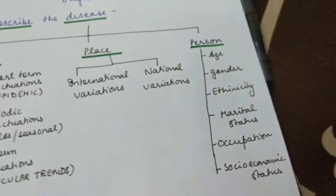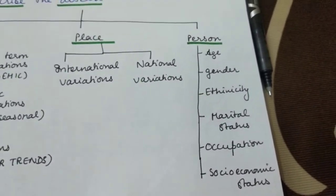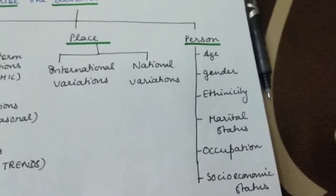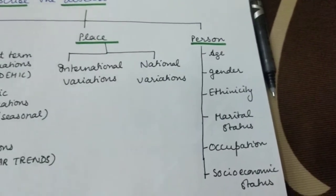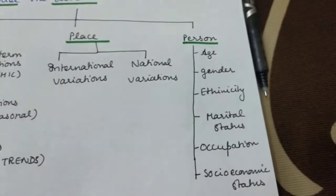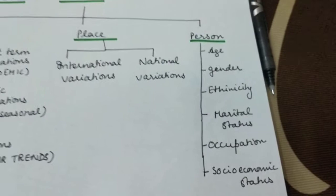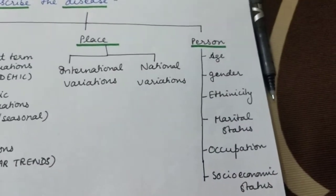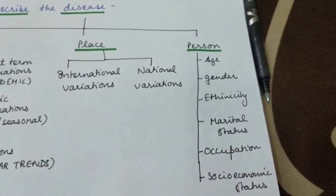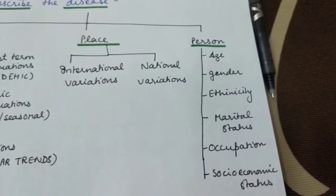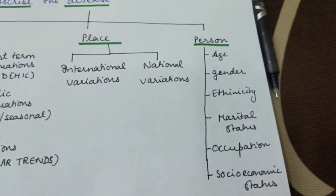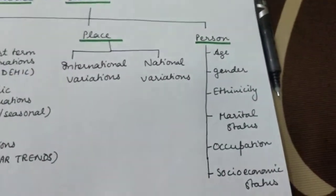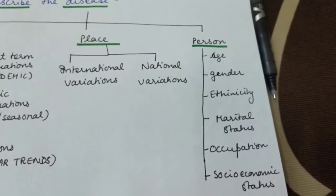Place distribution can show international variations: in Japan there are increased cases of stomach cancer, in the USA increased cases of breast cancer, and in India increased cases of carcinoma cervix in females and oral carcinoma in males. Nationally, Kangri carcinoma is seen in Kashmir, goiter in the sub-Himalayan belt, Kyasanur Forest disease in parts of Karnataka, leprosy is common in Uttar Pradesh and Bihar, and diabetes mellitus is more common in Punjab.